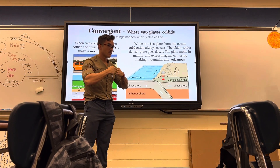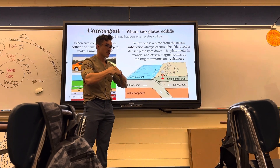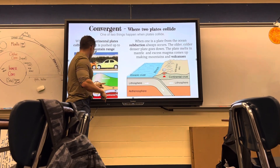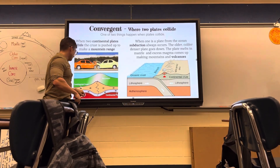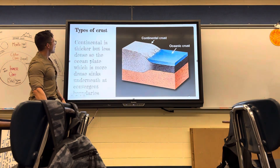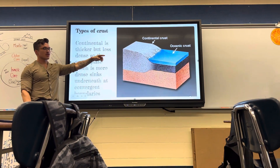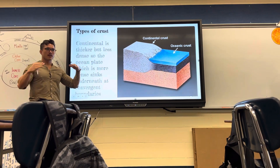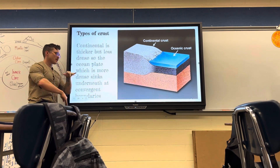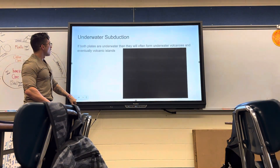When two land plates smash together they make a mountain range. The ocean crust is thinner but denser, so it goes underneath at convergent boundaries.